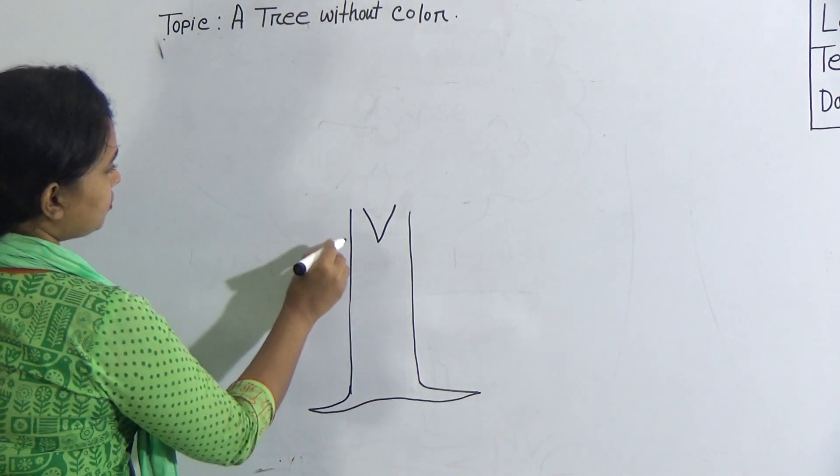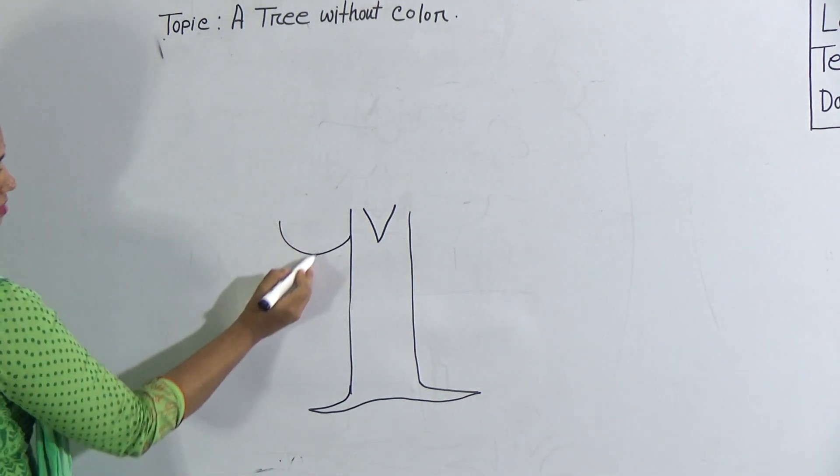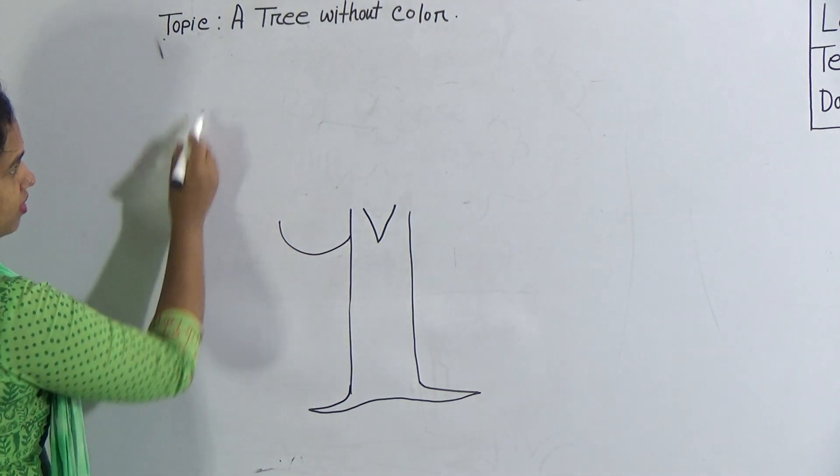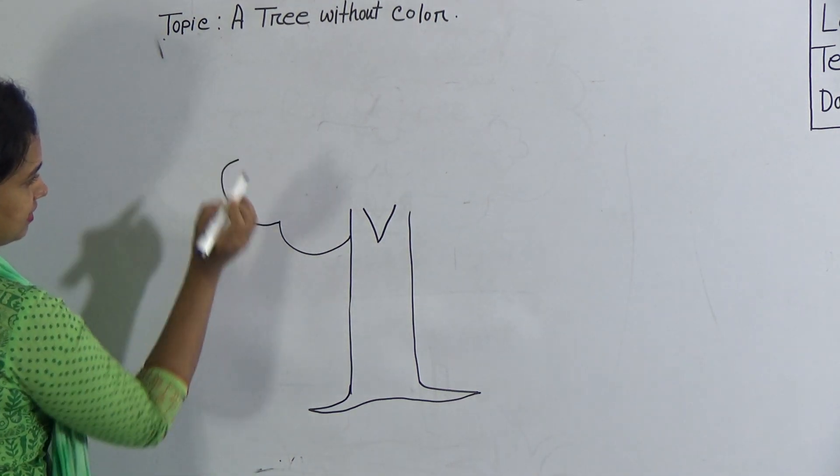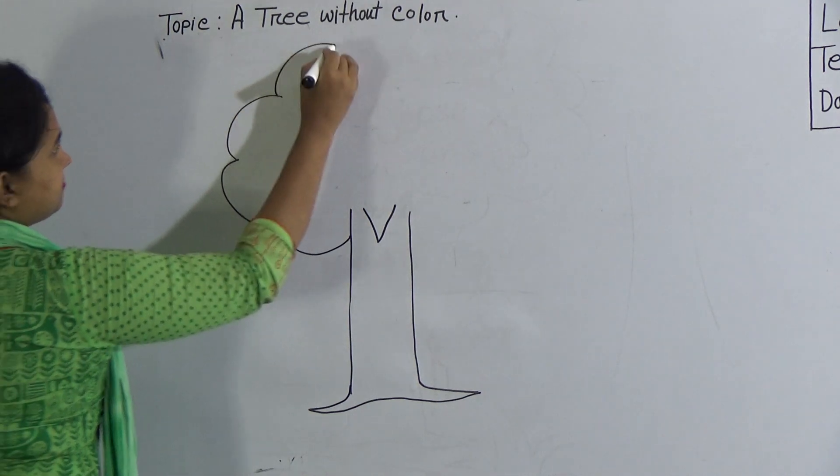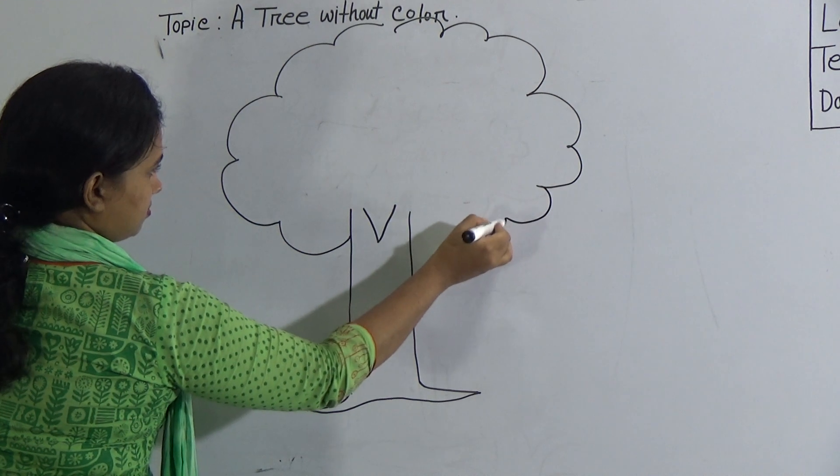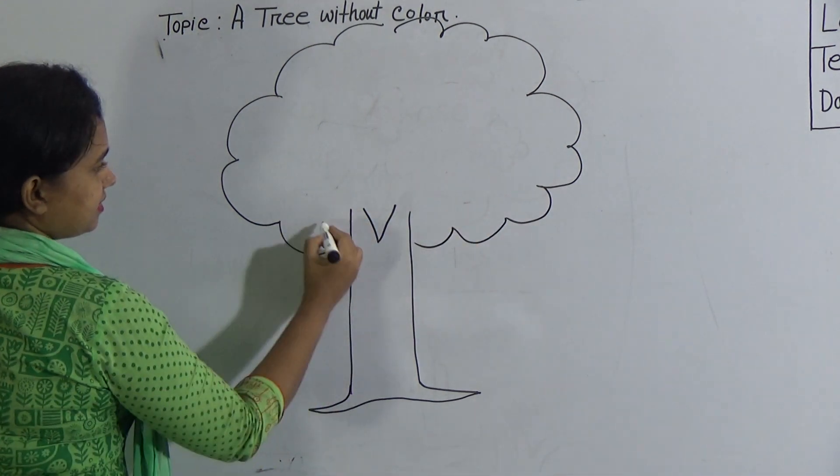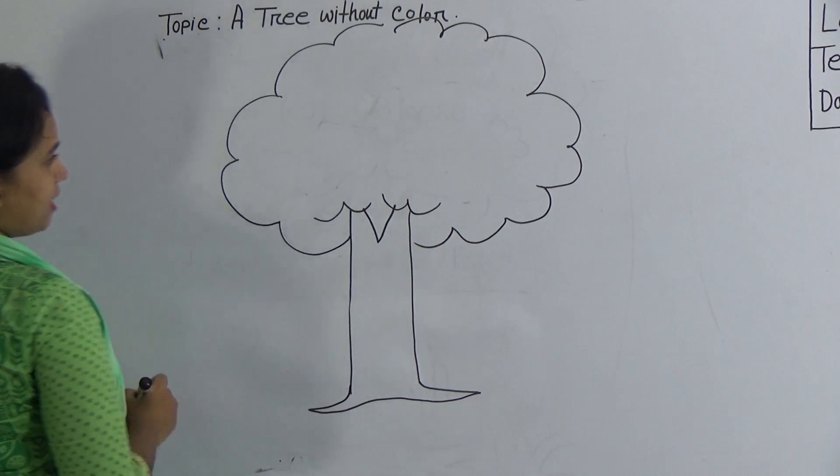And then draw some zigzag line. That means the curve line. Look, I have joined the curve line more and more and then it will be the tree. Join, join curve line again, then look. And then here also.